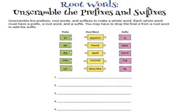The second activity is where you have the root words and you have to unscramble the prefixes and suffixes to make the correct word. It says: unscramble the prefixes, the root words, and suffixes to make a whole word. Each whole word must have a prefix, a root word, and a suffix. You may have to drop the final e from a root word to add the suffix. That is the work for today. Good luck, I hope you are well — enjoy this activity.